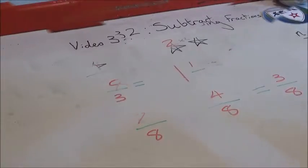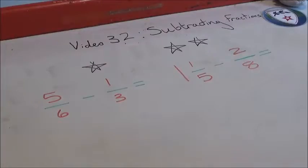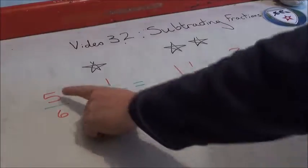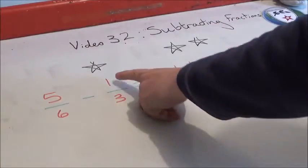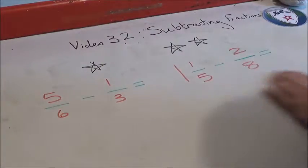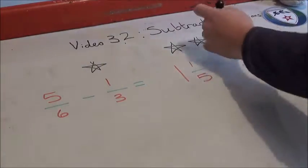Alright, it's your turn. So here we have two questions. First one: five-sixths take away one-third. And then, moving over here, this is actually another level up.